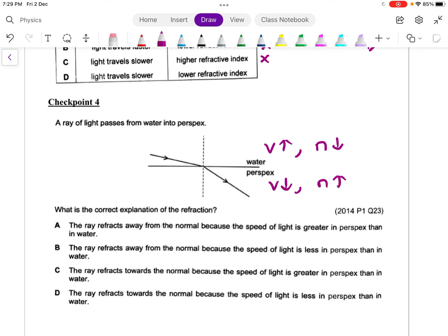Option A: the ray reflects away from normal because the speed of light is greater in perspex - this is wrong. Part B, the ray reflects away from the normal - also wrong. Part C, the ray reflects towards the normal because the speed of light is greater in perspex - also wrong. Option D: the ray reflects towards the normal because the speed of light is less in perspex than in water. This is the correct answer.